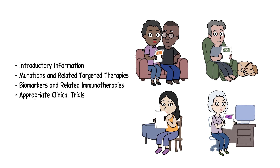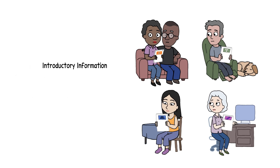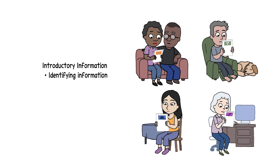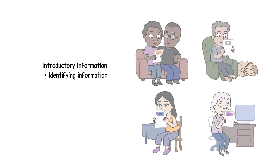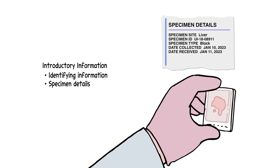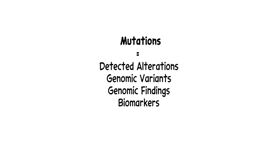Page one of a report generally includes some identifying information about you and the doctor who ordered the test, as well as some details on the sample received by the lab. The rest of the first page is a basic summary of your results and appropriate therapies.